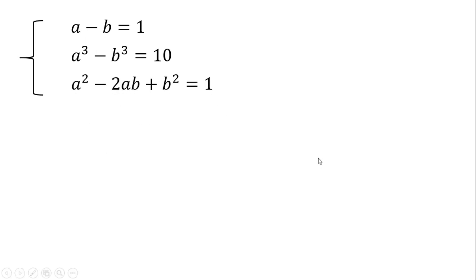Okay, now let's bring back a cubed minus b cubed equals 10. Notice that the left-hand side is a difference of cubes. So we can factor this into the quantity a minus b times the quantity a squared plus ab plus b squared. But notice that a minus b is just equal to 1. So the a minus b here can be replaced by 1. And so we will have the equation a squared plus ab plus b squared equals 10.